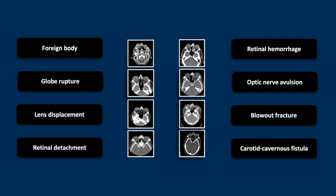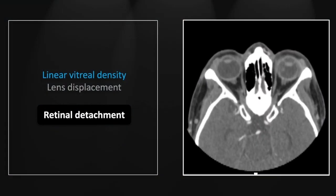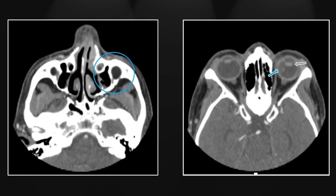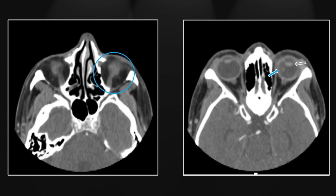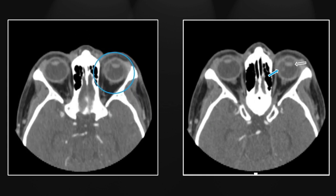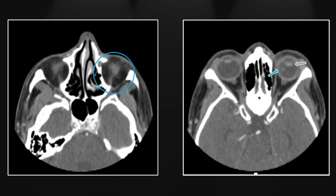Next is a case of retinal detachment. You can see there is a linear filling defect within the globe. Many of these retinal detachments begin peripherally, either far medially or laterally, so this is fairly typical. Note also the subluxation of the lens — slight posterior displacement without frank dislocation. On the movie you can see medially and laterally there are linear filling defects within the globe representing the detached retina.